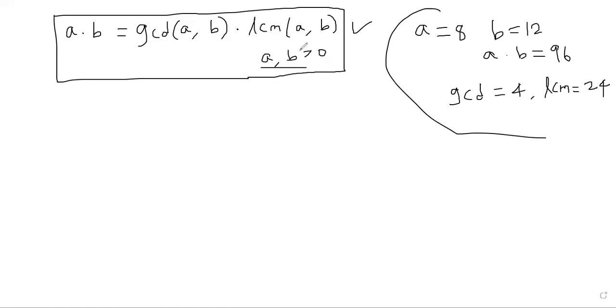But in math, you need to prove for all possible A's and B's. So let's do that. How do we prove that A times B is same as GCD of A,B times LCM of A,B? One of the immediate benefits of this theorem is that if you know the product A and B and if you know GCD, you can compute LCM. If you know LCM, you can also compute GCD.